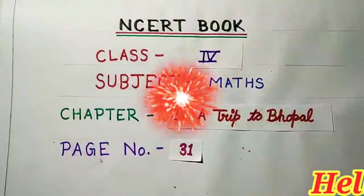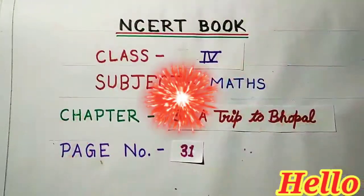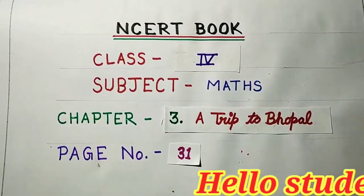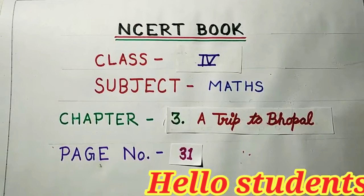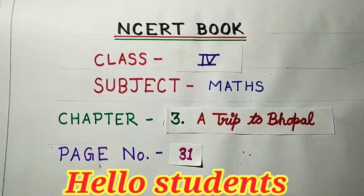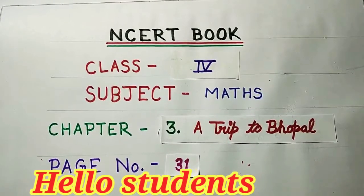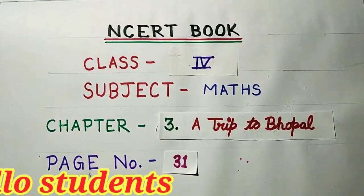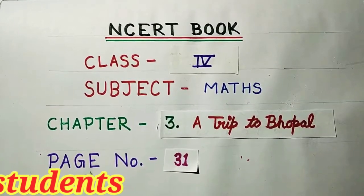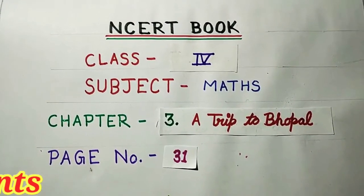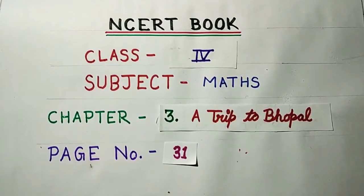Hello students, how are you? I think all of you will be fine. So today we are going to learn about our NCRT book class 4 subject math chapter 3, a trip to Bhopal, page number 31. If you have not seen our previous video of this chapter, you should go to the description section of this video and follow the link to watch those videos.